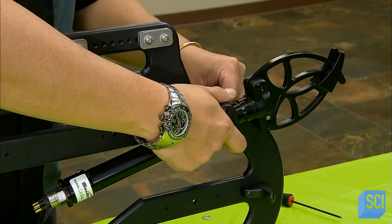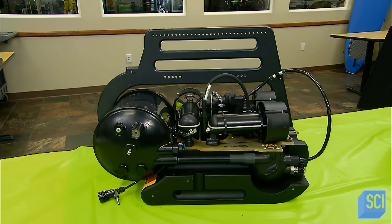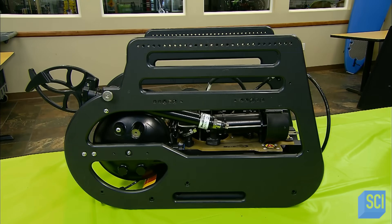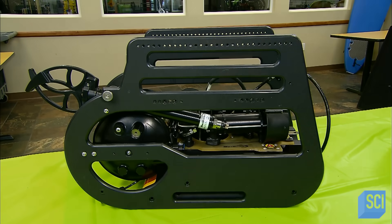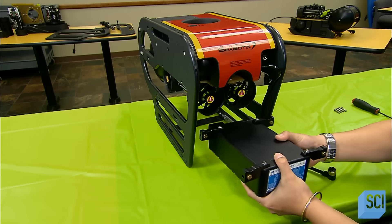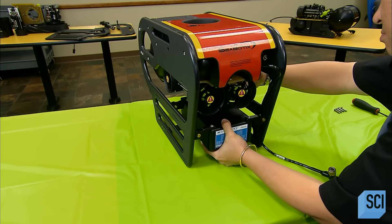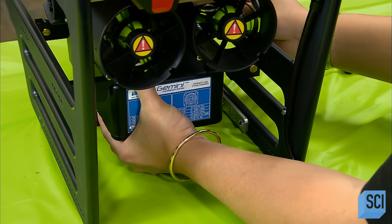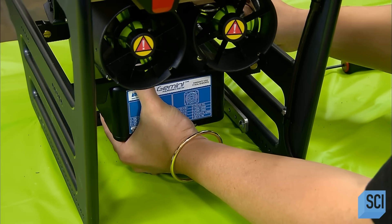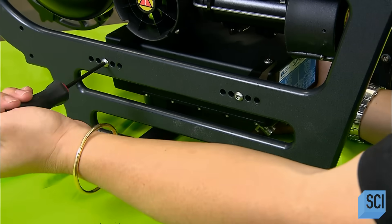They install the jaw at an angle so that it doesn't block the camera's view. Now the sonar unit. It also mounts to the bumper frames. The sonar projects a 130-degree left-to-right 3D image onto a monitor at the surface, showing the outline of objects around the robot.